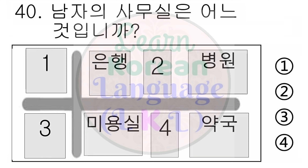27번. 오늘은 9월 셋째 토요일입니다. 오늘은 며칠입니까? 1번. 9일입니다. 2번. 16일입니다. 3번. 23일입니다. 4번. 30일입니다. 다시 들으십시오. 오늘은 9월 셋째 토요일입니다. 오늘은 며칠입니까? 1번. 9일입니다. 2번. 16일입니다. 3번. 23일입니다. 4번. 30일입니다.